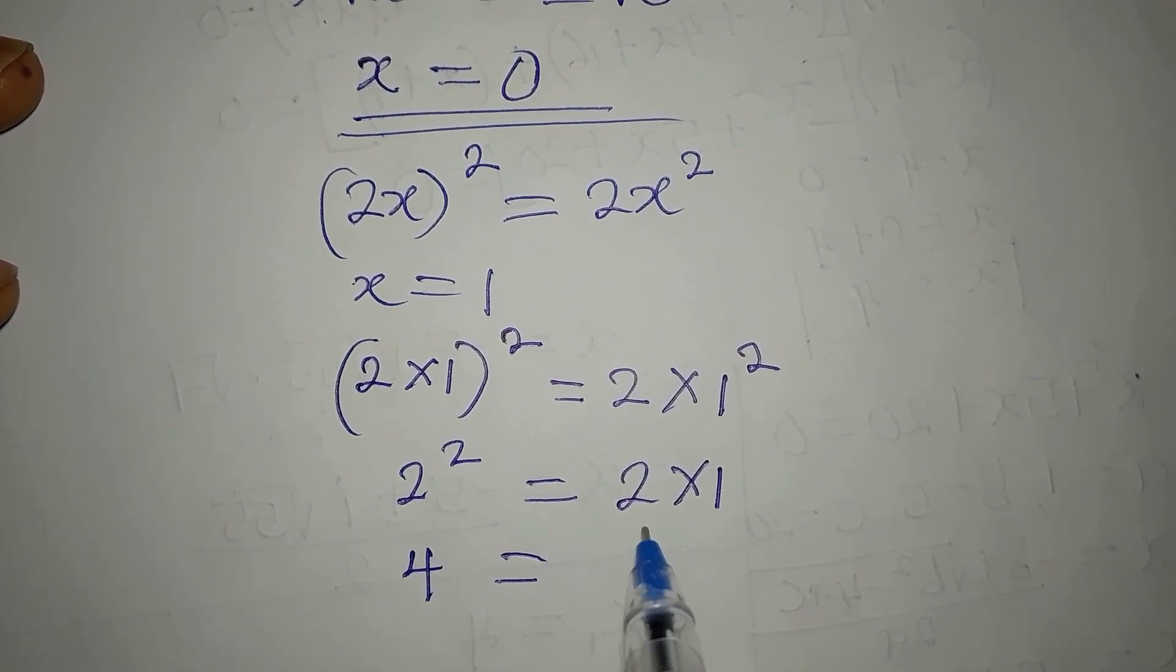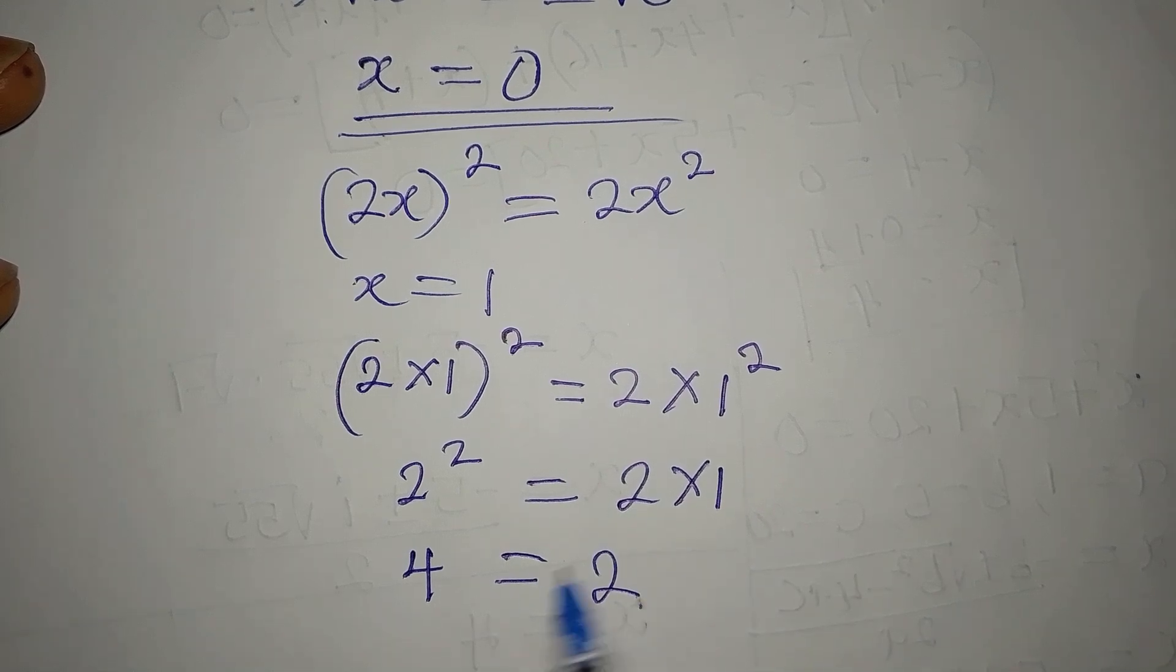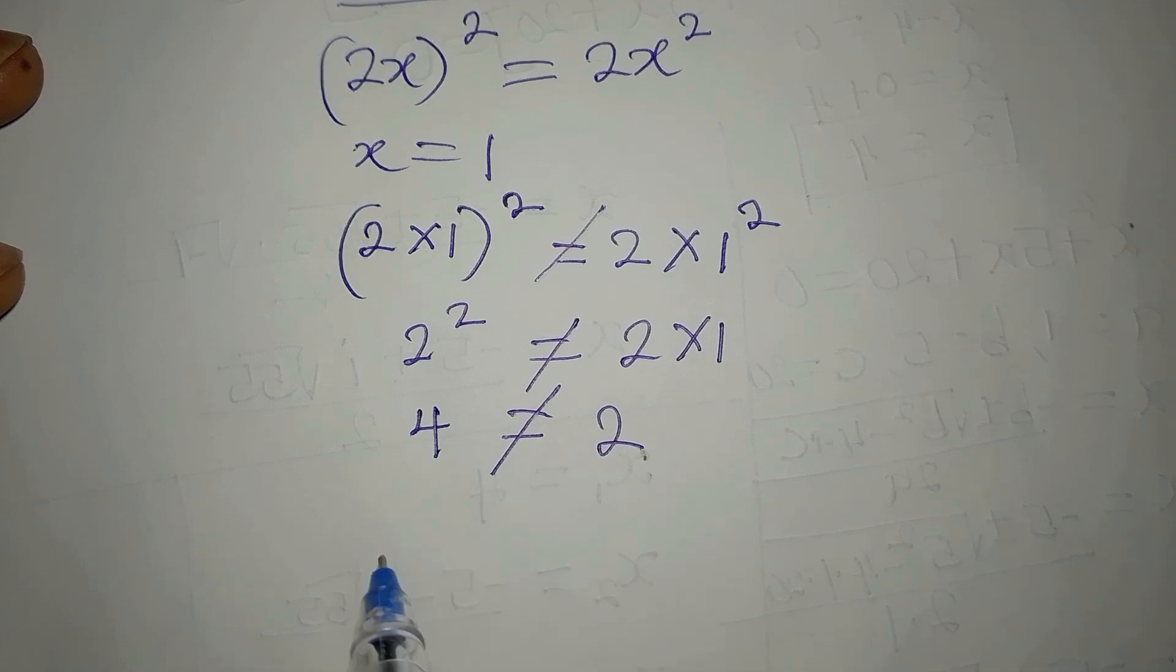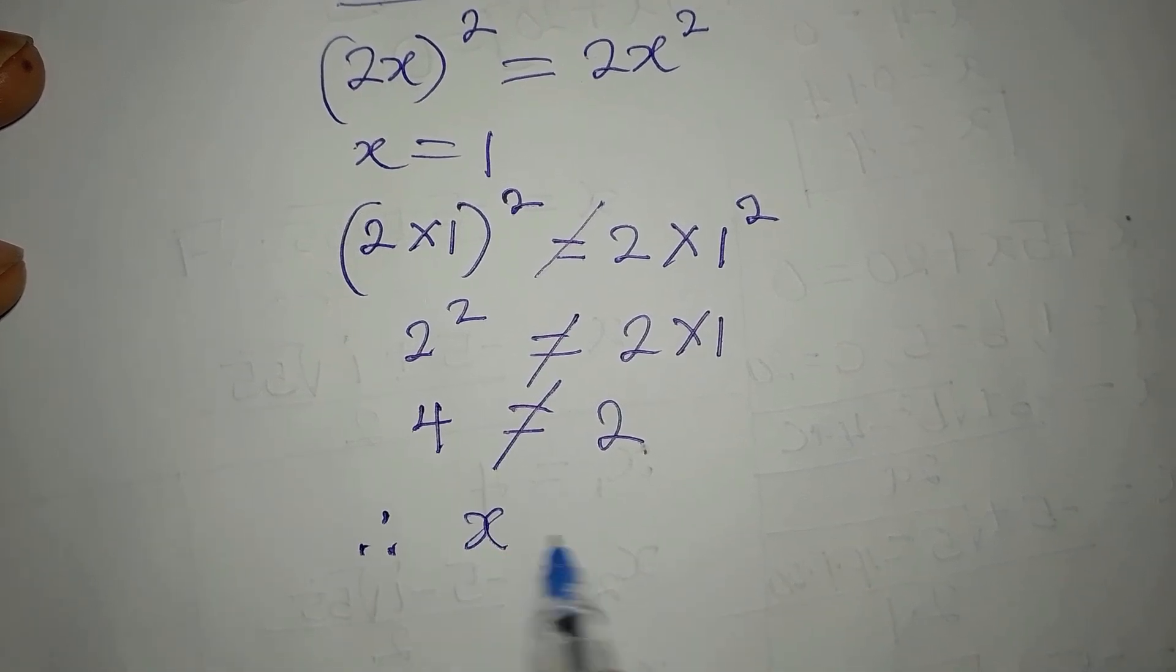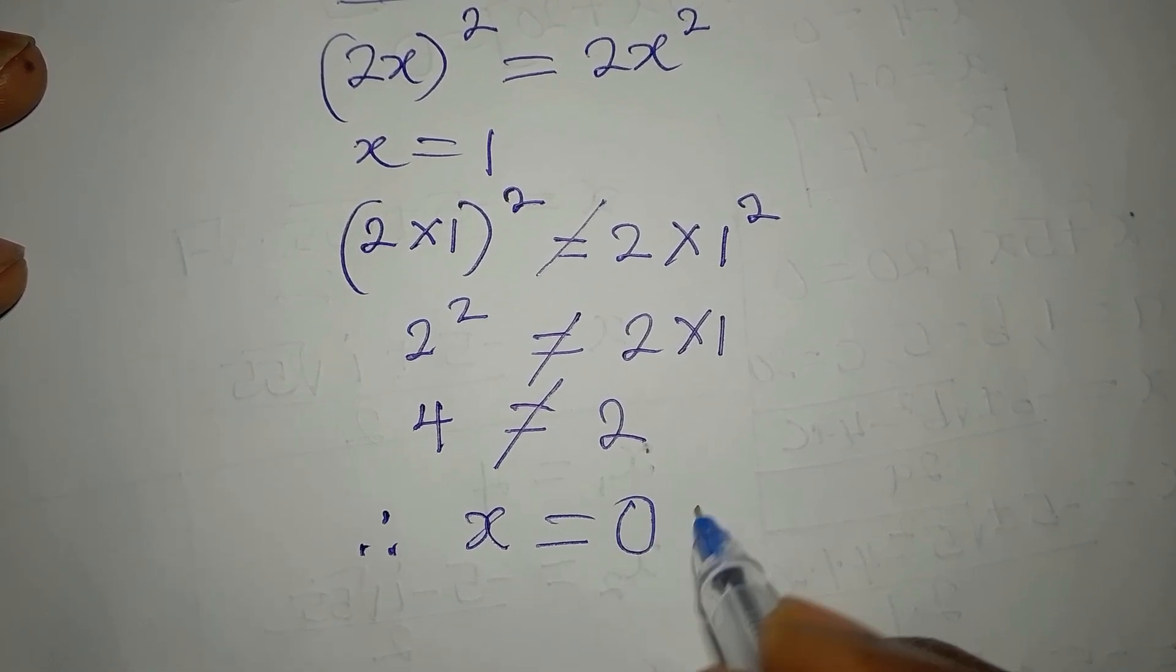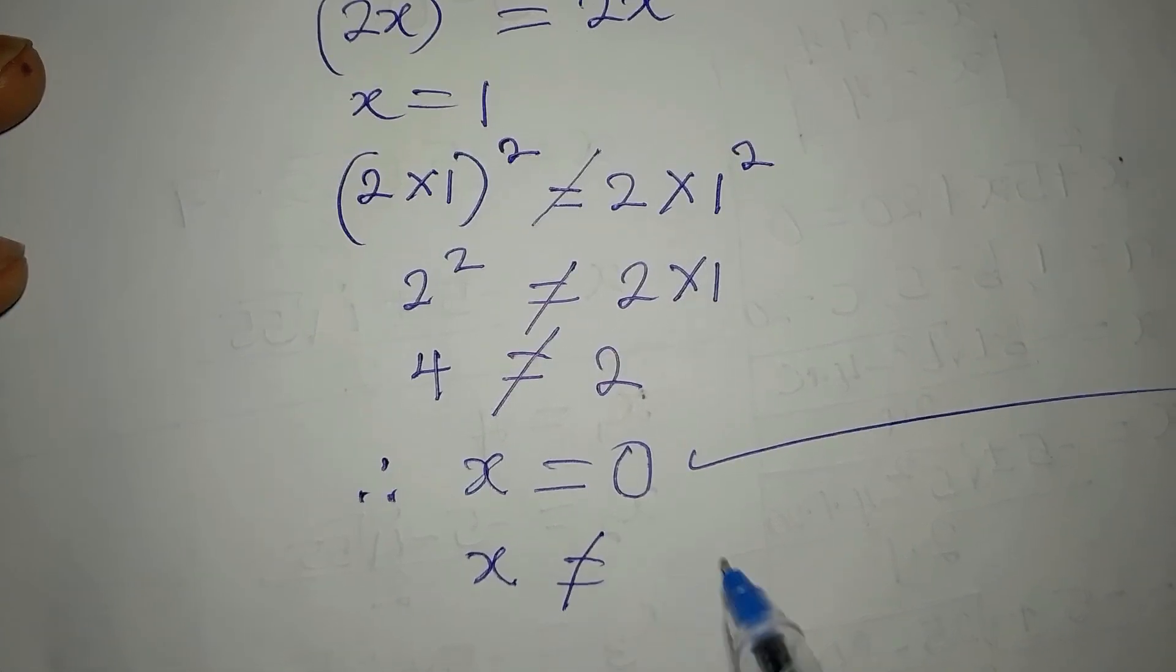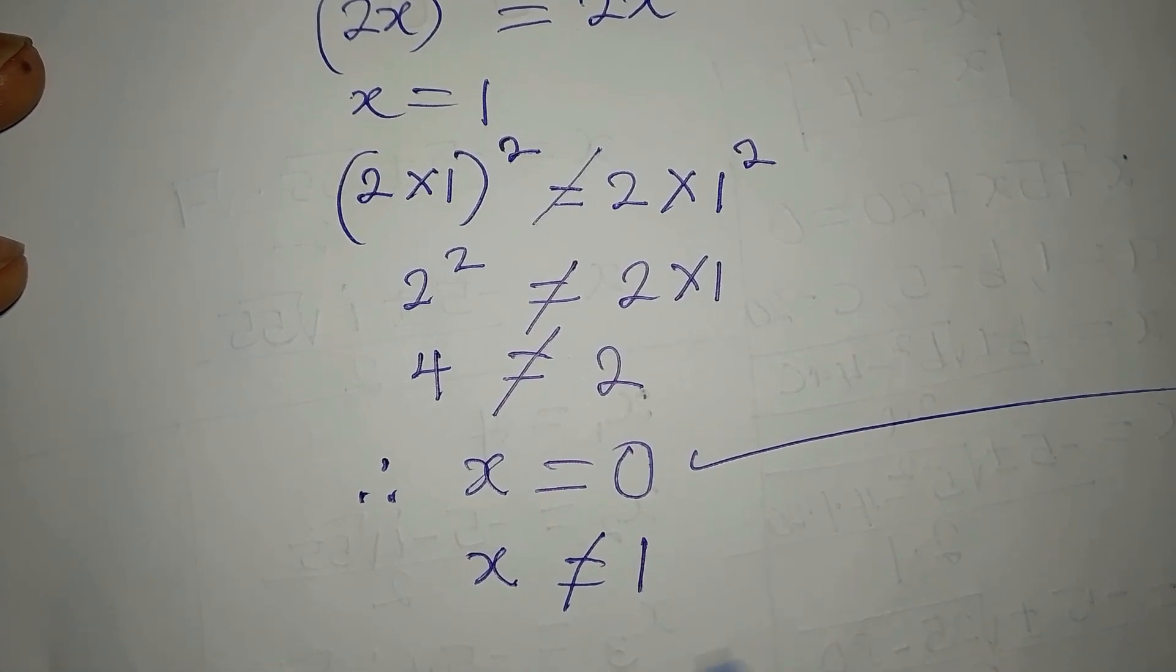And on the other side we have 2 times 1 which is 2. And these are not equal. Therefore 4 ≠ 2. So x equals zero satisfies, and x equals one cannot satisfy, so x is not equal to one.